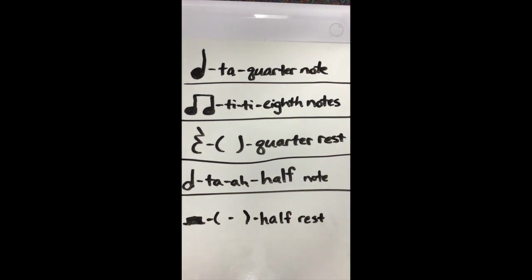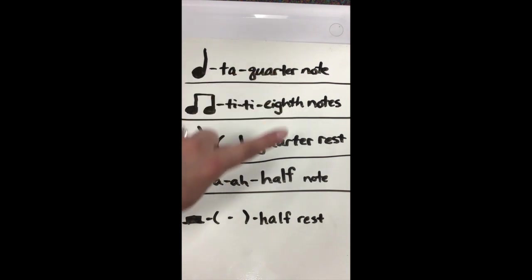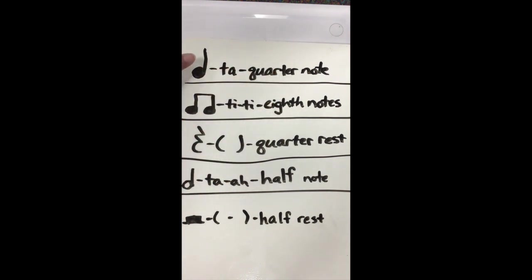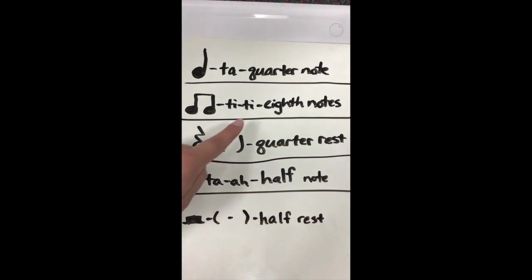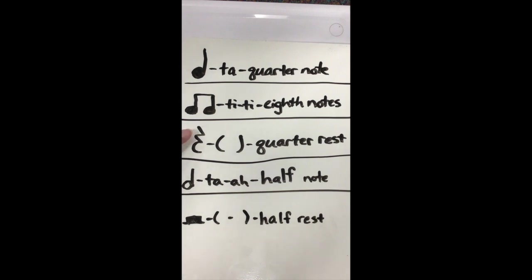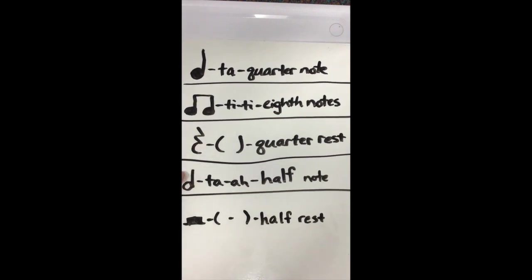Down here in the middle, this is our quarter rest — it also gets one beat. Notice 'quarter' and 'quarter' are related: the quarter note gets one beat of sound, the quarter rest gets one beat of silence. That's why I put parentheses — it's empty, we say nothing. So imagine you're saying 'ta' in your head, but we make no sound for this one.